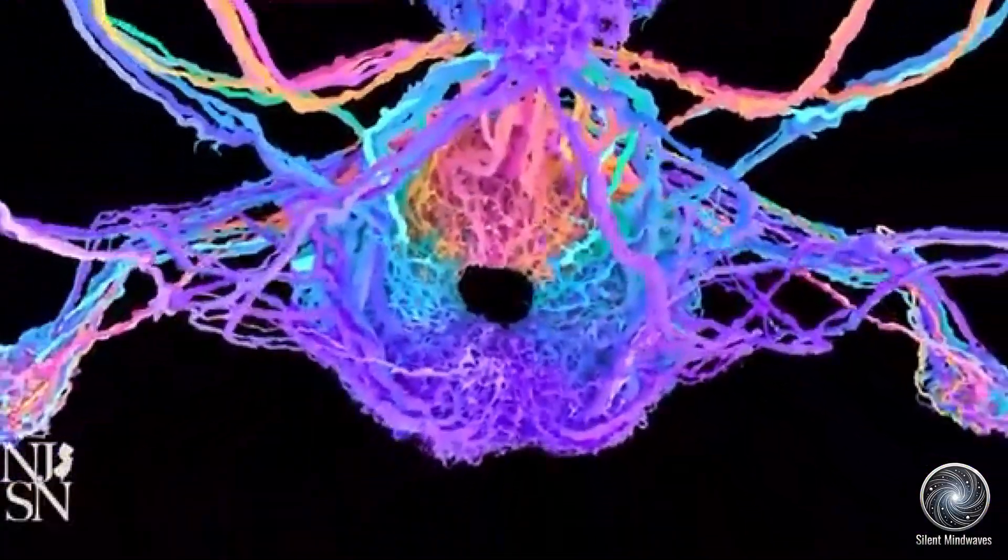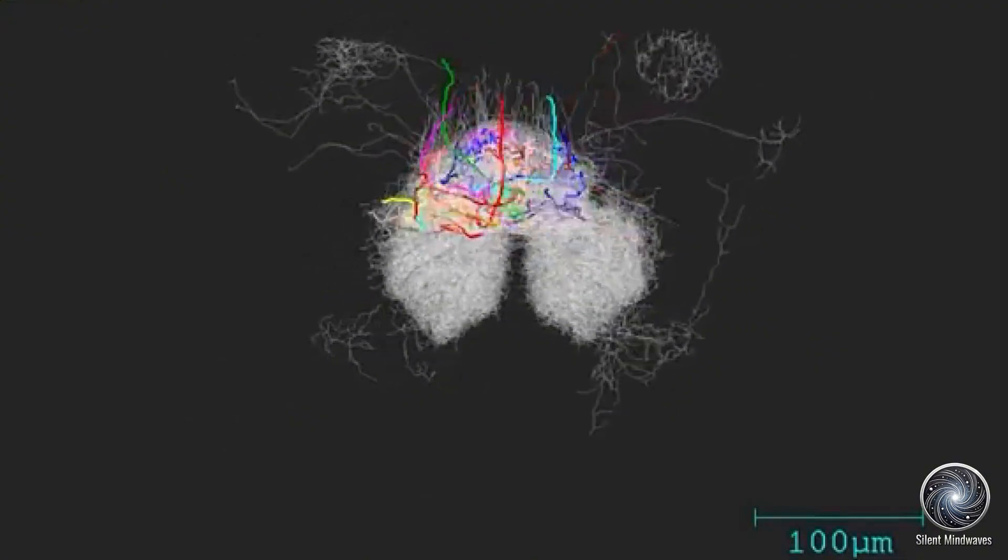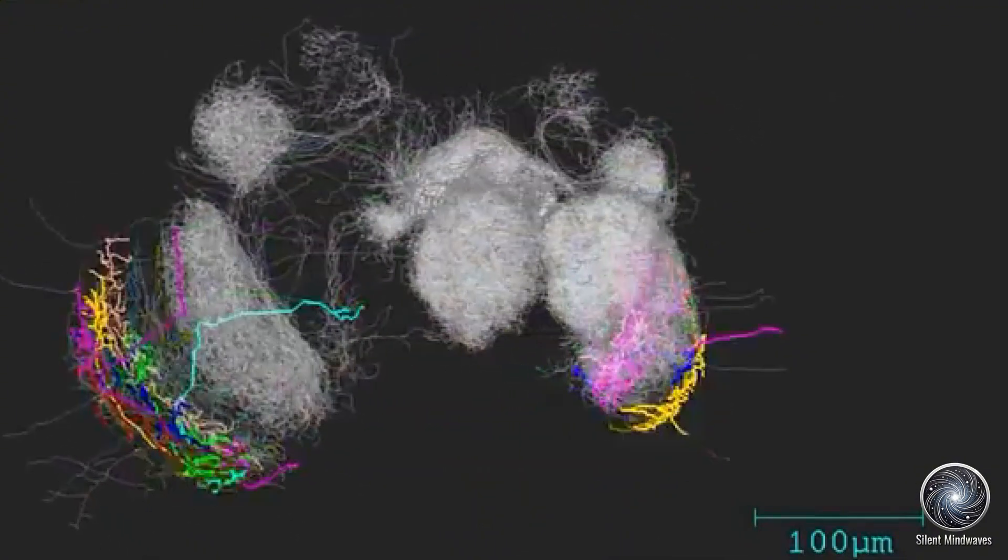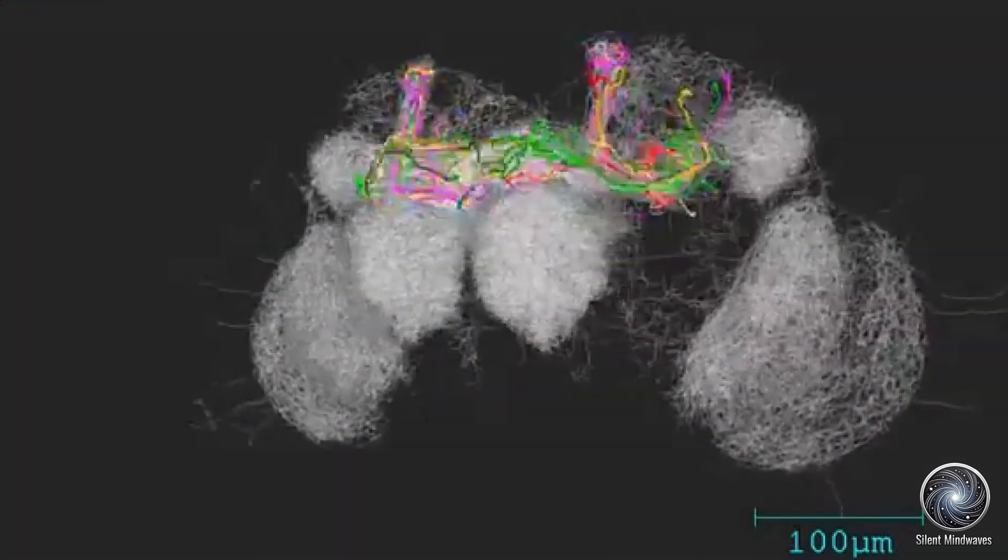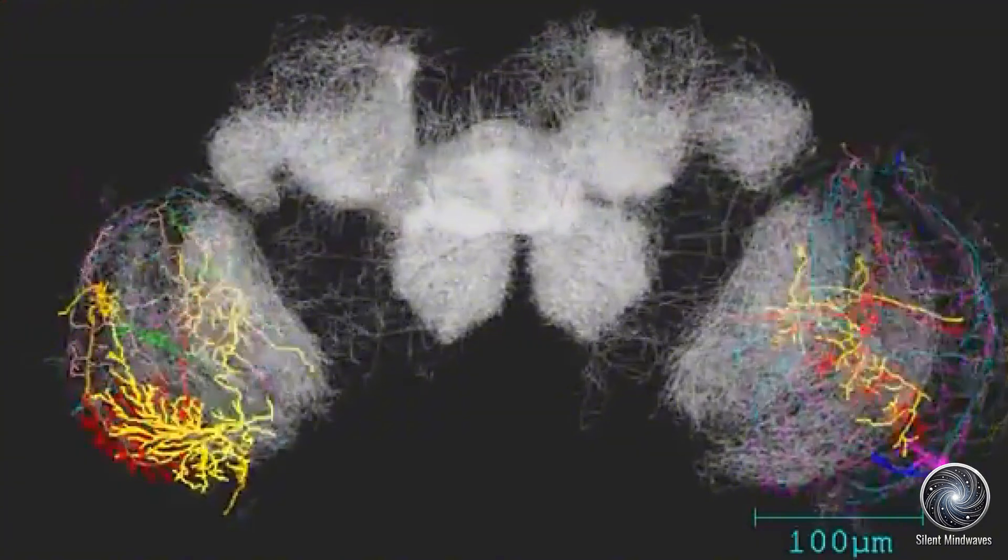Looking ahead, the next phase of research will involve mapping the brain of a male fruit fly, which differs slightly from the female in terms of neural structure and behavior. Following that, scientists hope to move on to more complex organisms, such as mice.